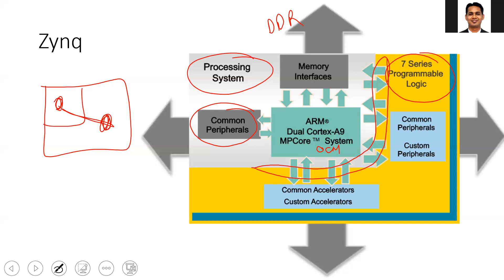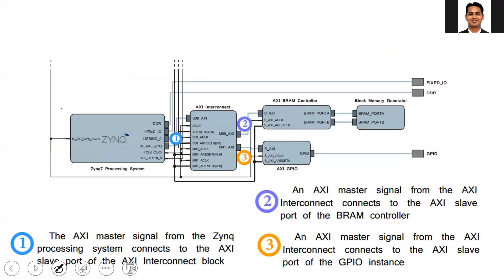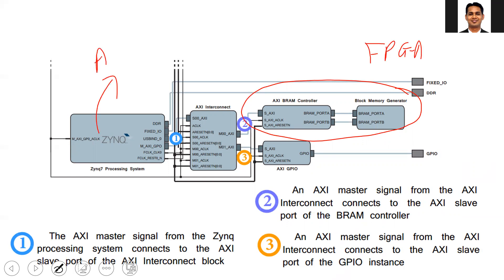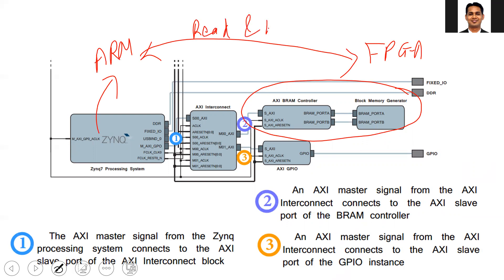So if you are well-versed with the theory of the AXI read/write transaction, you will be able to correlate with the data in today's lab. Specifically, what we are going to do is have block RAM memory inside your FPGA and using the ARM processor we are going to perform read and write transactions in the block RAM memory.